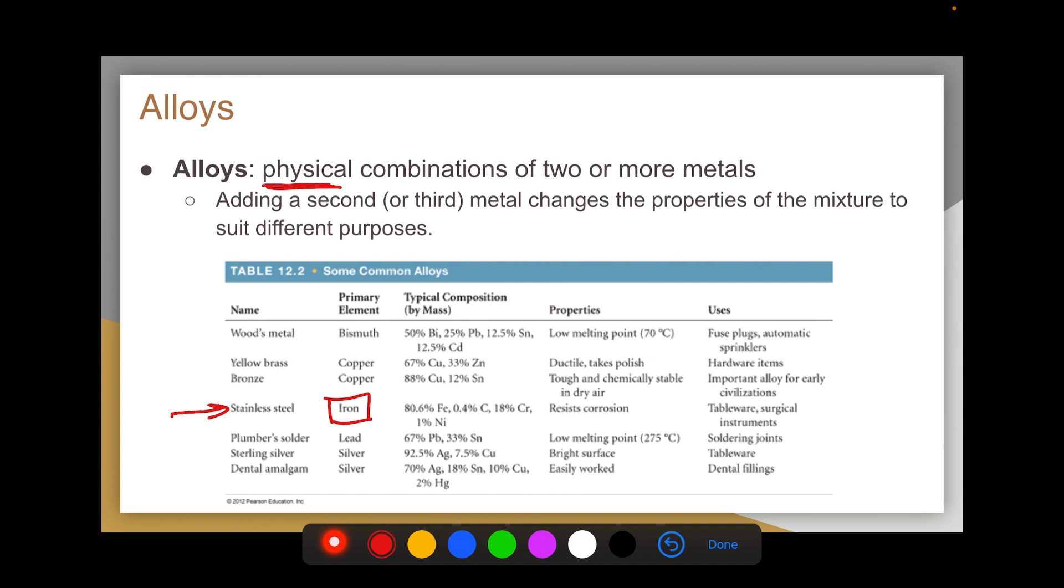However, if you alloy the iron with small amounts of carbon, chromium, and nickel, you now end up with a substance that resists corrosion, which is perfect for use as a cooking implement. So now you have all the properties of iron that you want, and it resists corrosion because you've alloyed the iron with some additional metals.